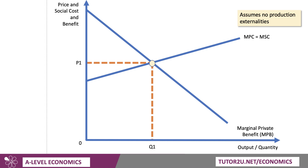So let's work through the diagram. Cost and benefits on the y-axis, quantity and output on the x-axis. We're going to assume here there are no production externalities, so marginal private cost equals marginal social cost.